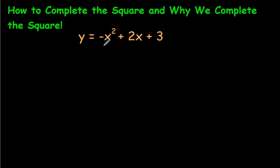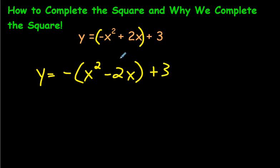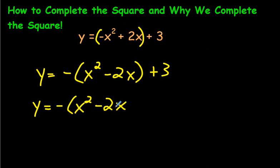Let's do another one. Here we have a coefficient of negative — we have this negative on the outside, so we have to get rid of that negative before we continue. Bringing the negative out is actually going to change the signs inside these brackets: so instead of plus 2x, it's going to be minus 2x. The plus 3 is not being affected because it's outside the brackets. Now let's continue getting a trinomial perfect squared. Half of 2 — or negative 2 — is negative 1, but if you square that, negative 1 squared is just 1.